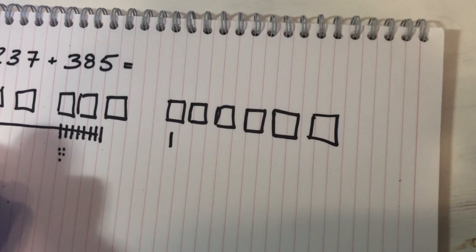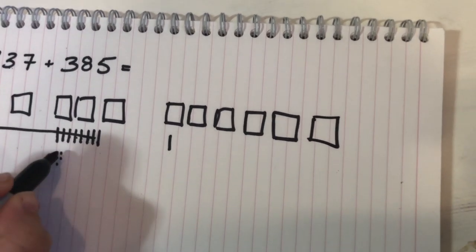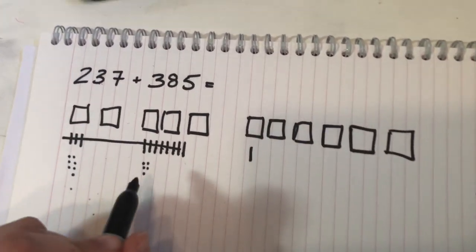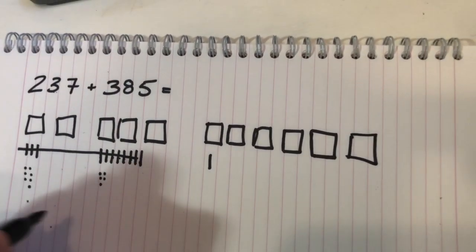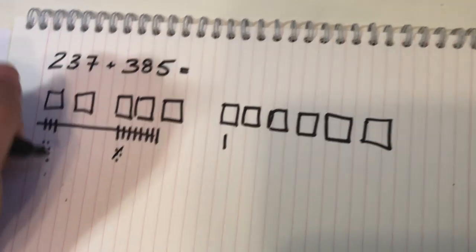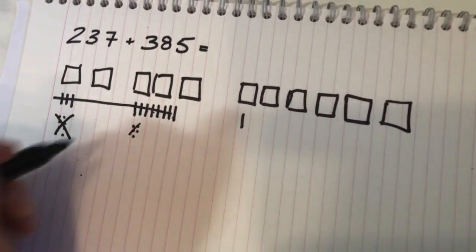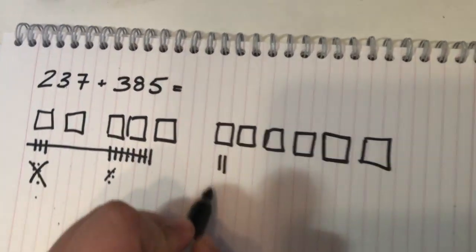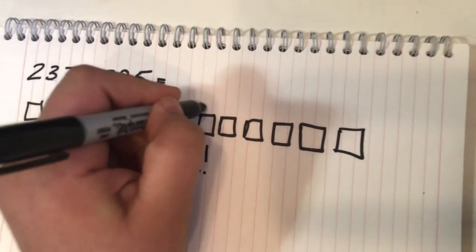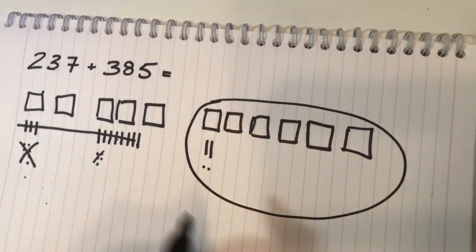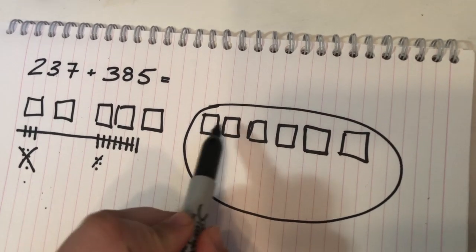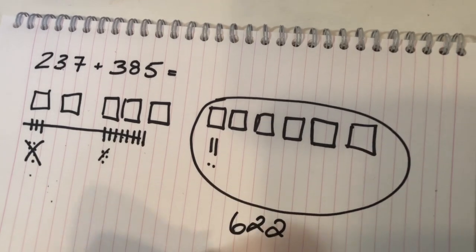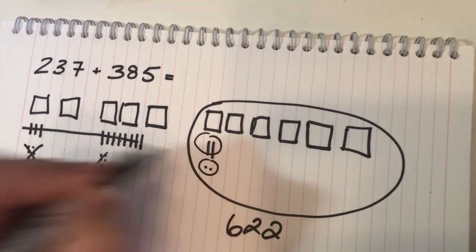And then we've got 1, 2, 3, 4, 5, 6, 7, 8, 9, 10, 11, 12 ones. So we're going to take away 10 of those, put another 10 on this side, and we'll have 2 remaining. So we've got the 2 tens and the 2 ones.